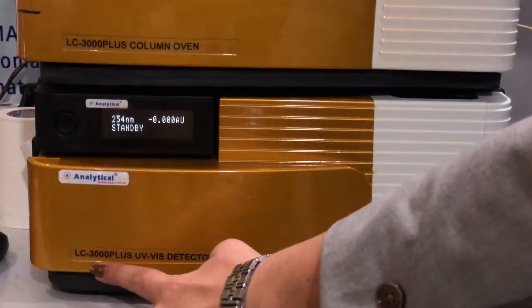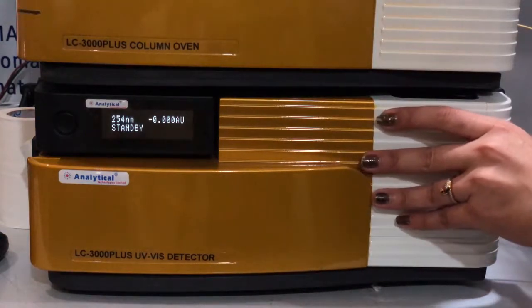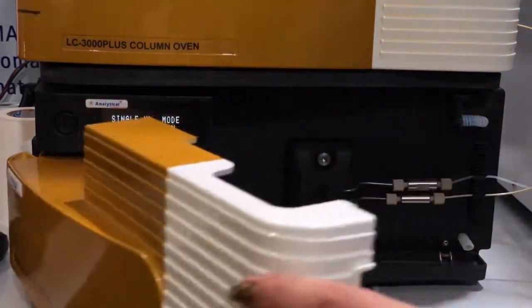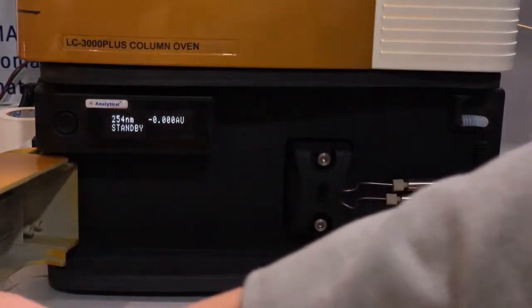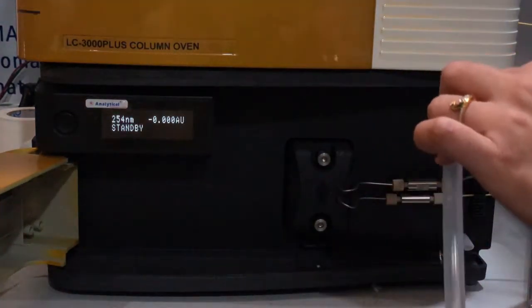Now let's see LC 3000 Plus UV-Visible detector. Upper side scale is the detector. This is the flow cell with inlet and outlet, and that's the waste tube.